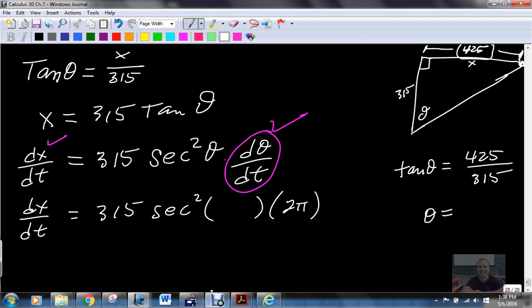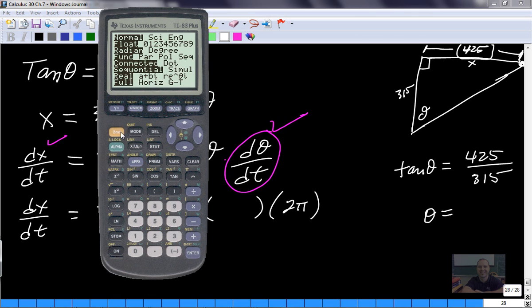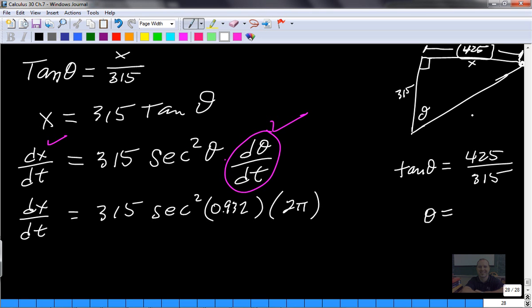Alright, so what is theta when this is the case? Get your calculator out. Second function, tan. Make sure you're in radians. I'm going to do second function tan, because I'm looking for this angle, and I'm just going to plug this in. 425 divided by 315 is 0.9329. So if this angle is 0.932 radians,